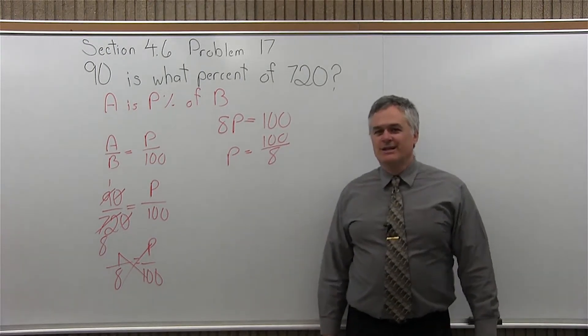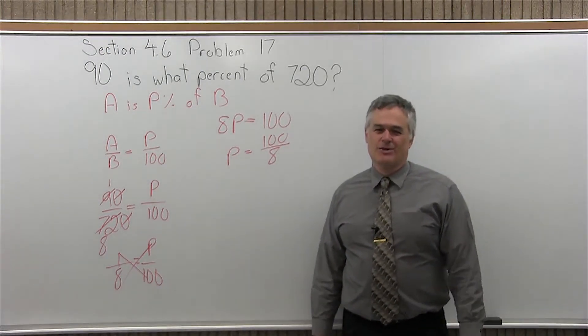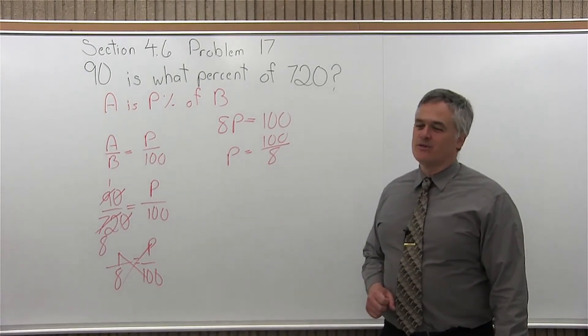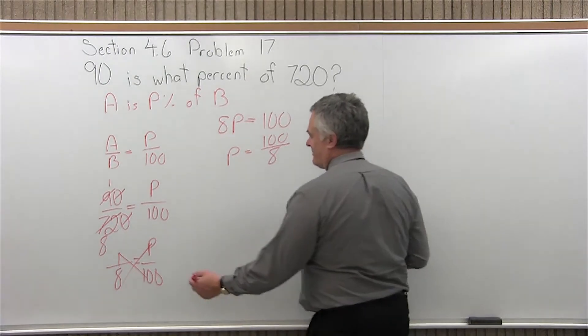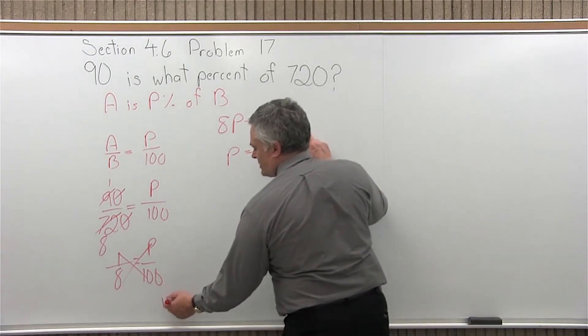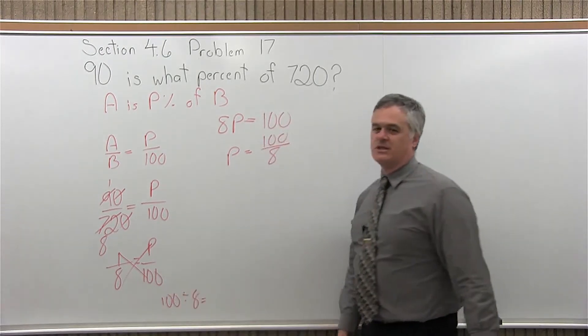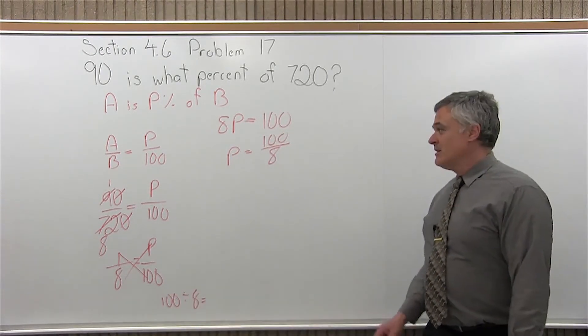Now, unfortunately, 8 does not divide evenly. We're getting a little bit of a decimal. If you have a teacher that allows you to use a calculator for this class, just take your calculator, enter the numerator 100, divide by the denominator 8 equals, the calculator will just give you the answer immediately.